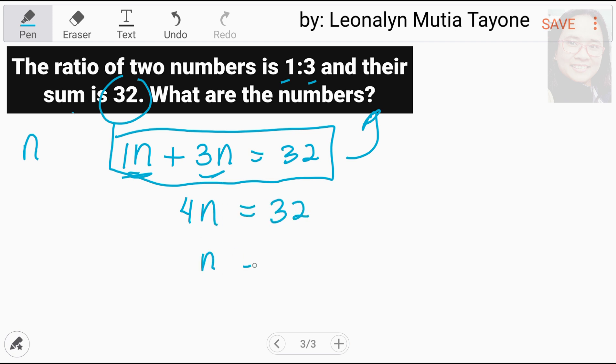Para ma-isolate si n dito, since si 4 pang-multiply sa n, pang-divide siya sa 32. So, wala na si 4 dito. 32 divided by 4 equals 8.